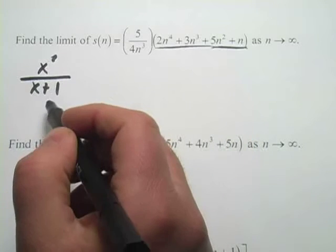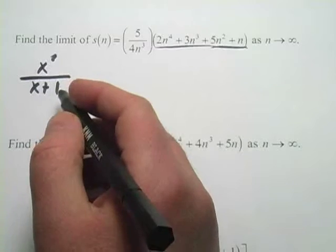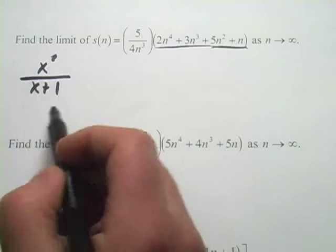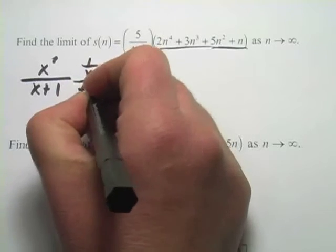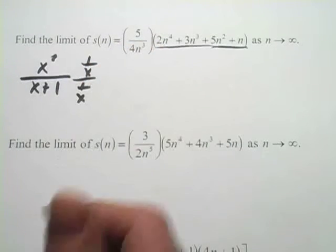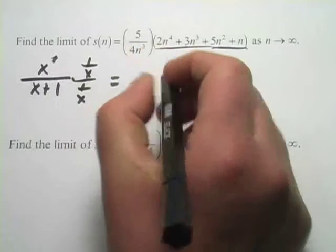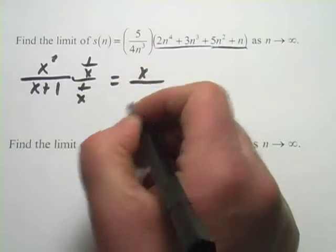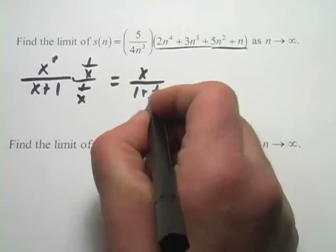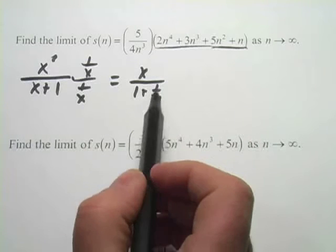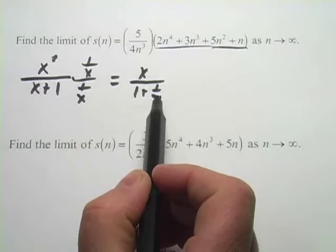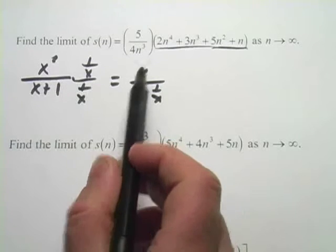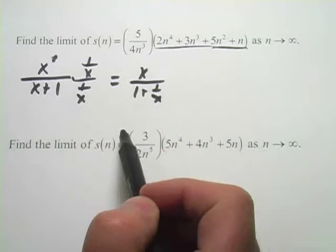And then, of course, the 1 is very insignificant. You may have worked on these problems by doing this, multiplying by 1 over x times 1 over x. What that would give you is x over 1 plus 1 over x. And here it's a little easier to see. At infinity, 1 over x, that's going to be 0. And this is going to be infinity. You end up with infinity over 1.